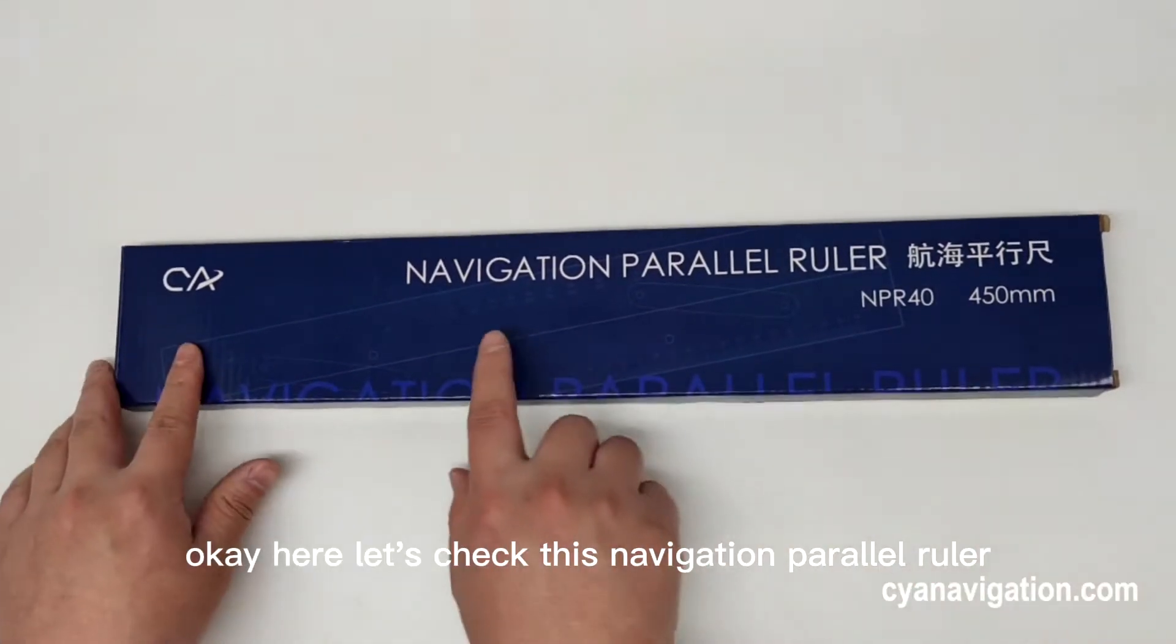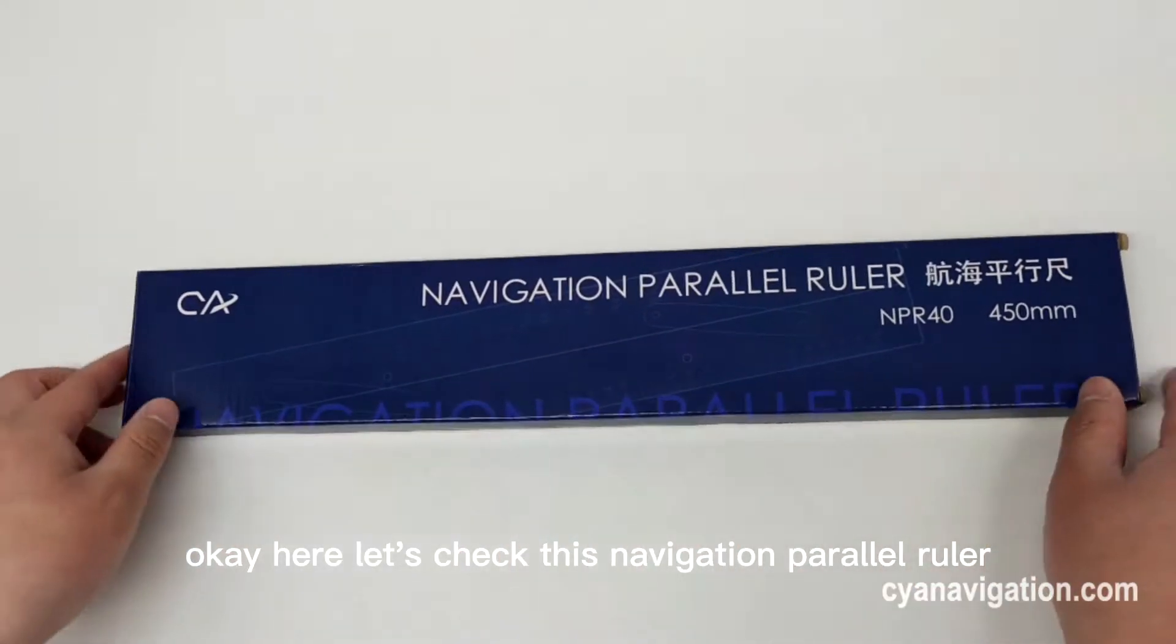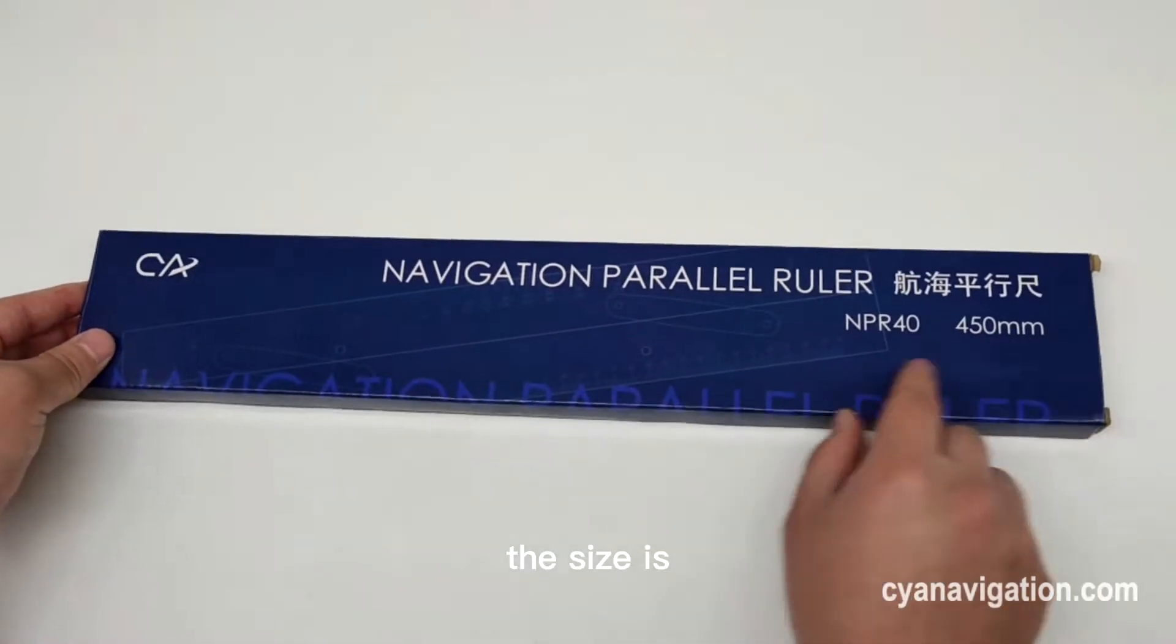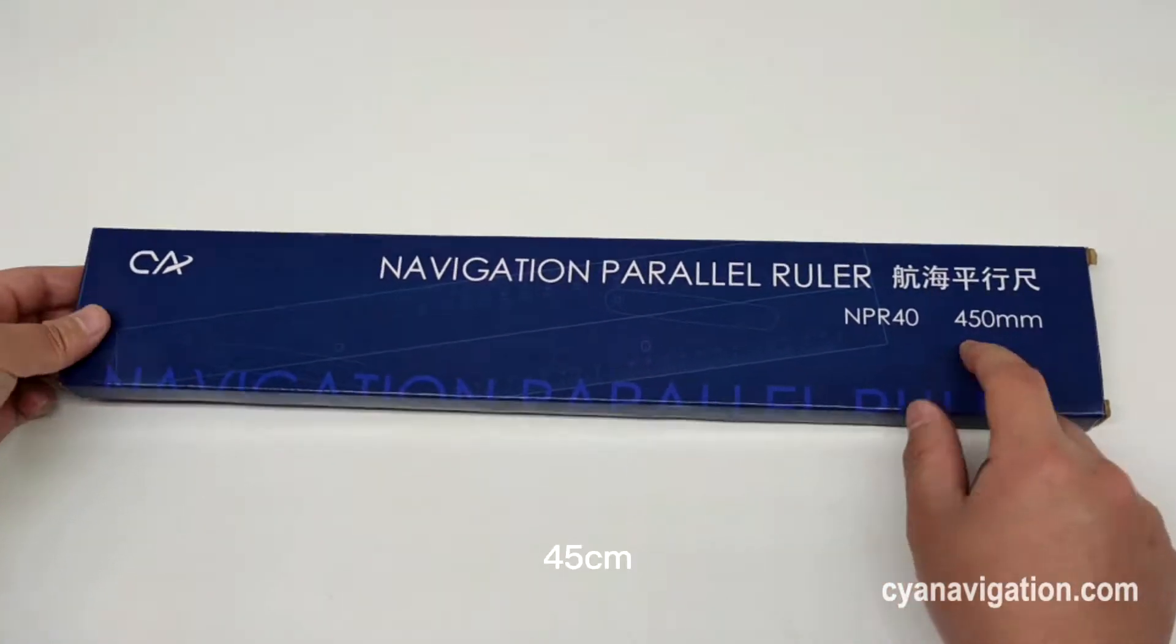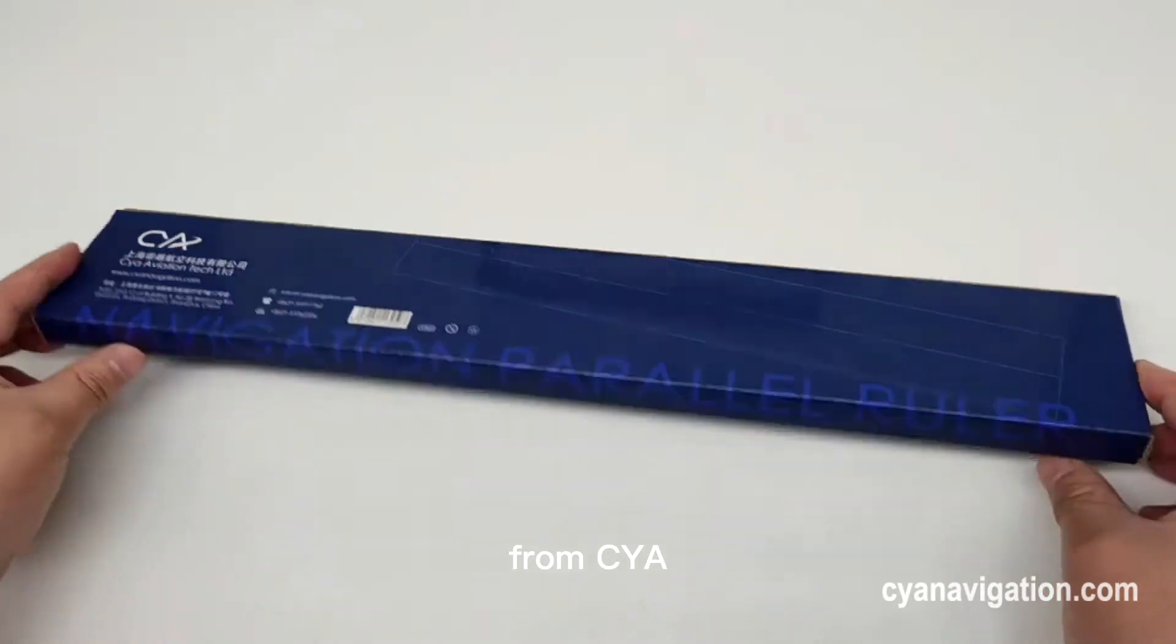Okay, here let's check this navigation parallel ruler. The size is 45 centimeters from CYA.